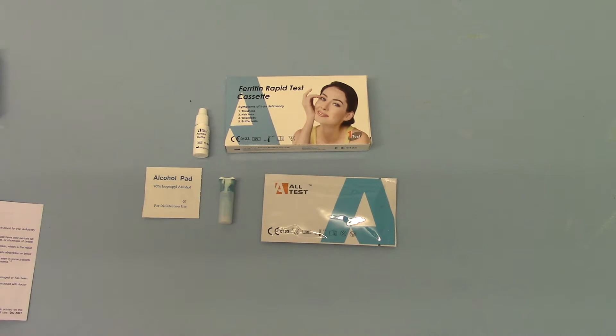Welcome to this product demonstration for the new AllTest Ferritin Home Test or Self-Test Pack. This is a complete home test including a lancet to do your finger prick to determine whether you have a low level of ferritin or an iron deficiency anemia.